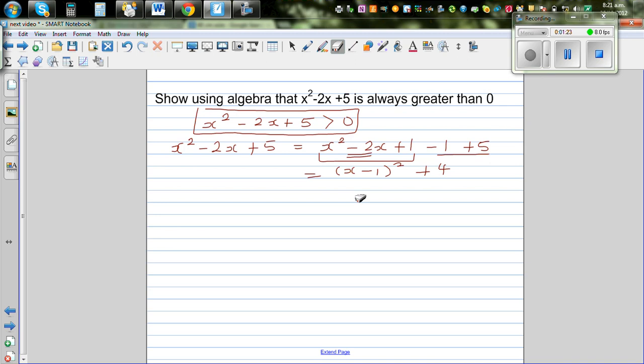Now this is where you use your logic. We can say x² - 2x + 5 equals (x - 1)² + 4. Whenever you are squaring any number, it's always going to be positive. So (x - 1)² is always greater than or equal to 0. It cannot be negative. This implies (x - 1)² + 4 is greater than 0.